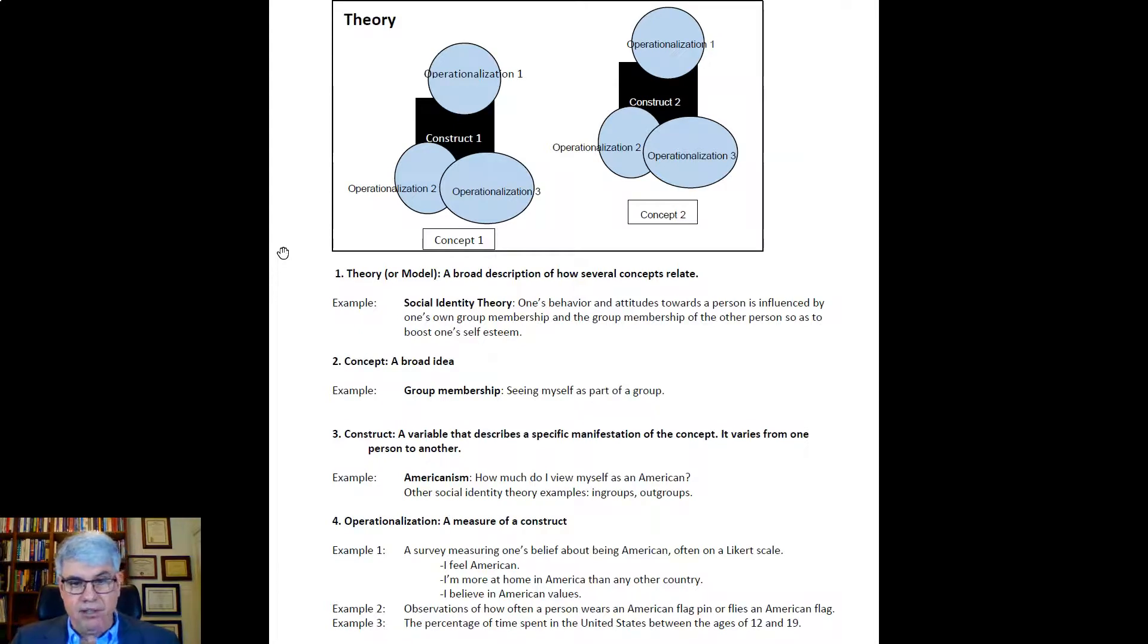A second operationalization would be a behavioral observation. We could note how often a person wears an American flag pin on their lapel or flies an American flag. That could be a measure of how American they are. Now, we're probably going to get really different scores between the first operationalization, the survey, and the second one. But that's okay, because we're going to choose the best operationalization for our definition of the construct.